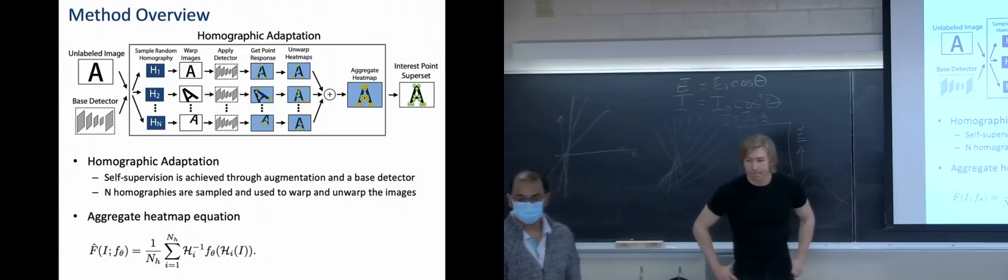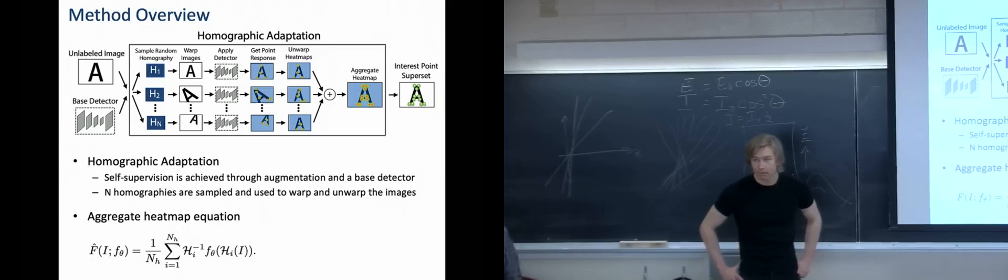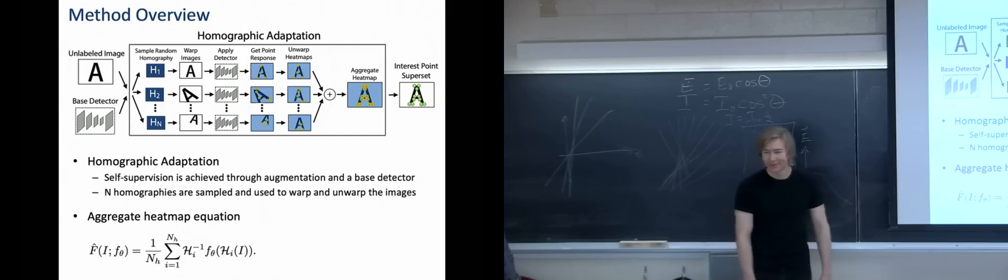So we are transforming the base image using these homographic adaptations. So can't we just use those adaptations to learn the base detector itself, so that you can just pass in a single image and then finally get all the key points present in the image? Do we require homographic key points and then pass each of them to the base detector? You would need a base detector to do this technique in the first place, so you can't train the base detector using this. I mean, you could train a new one using the previous one, yes. Okay. Which would be something else to consider. Okay.